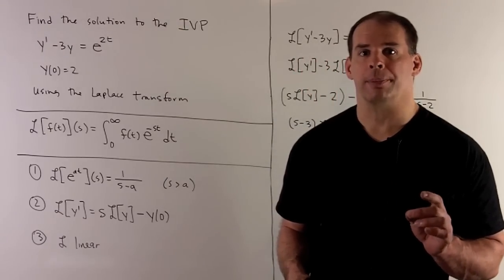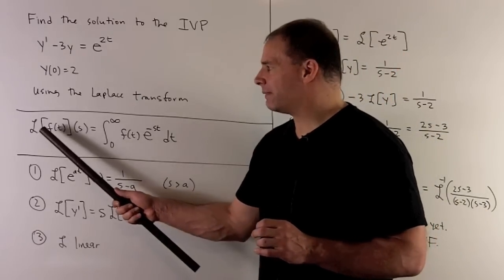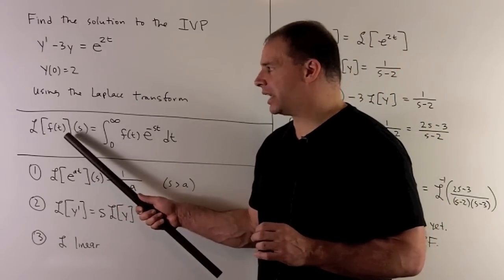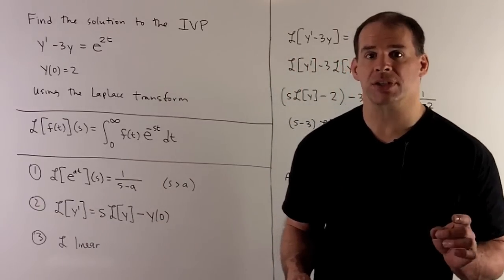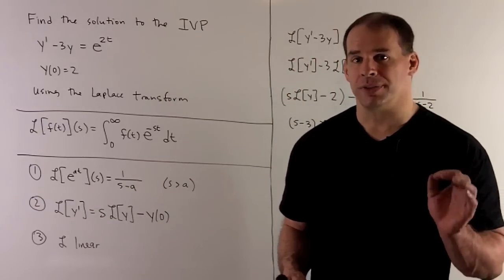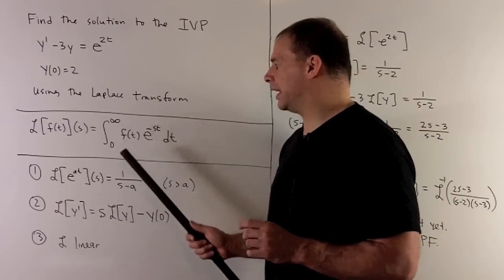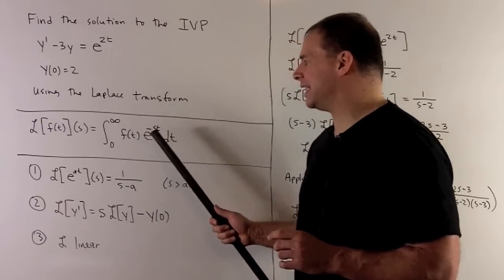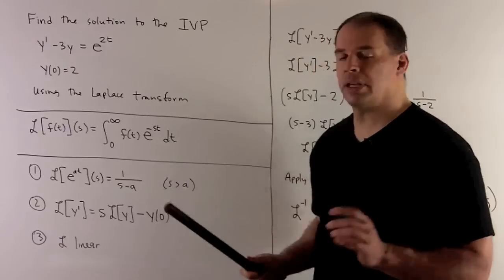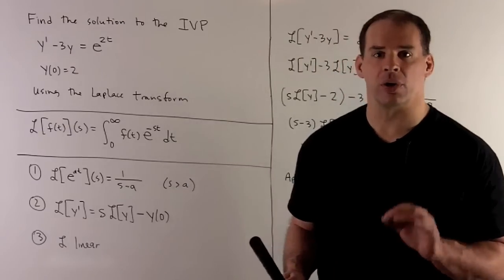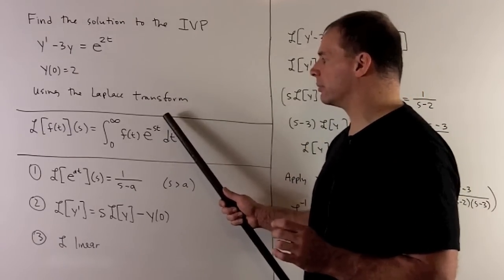The Laplace transform takes a function f of t and returns another function in the variable s. We define it as the improper integral from 0 to infinity of f of t times e to the minus st dt. We are integrating with respect to t, so we treat s as a constant.